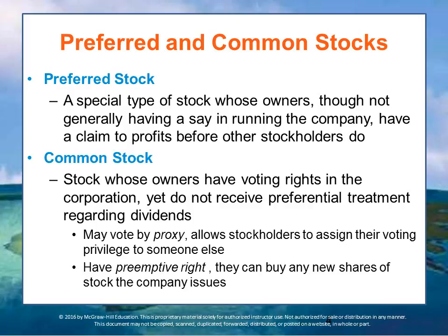Corporations issue two types of stock: preferred stock and common stock. Owners of preferred stock are a special class of owners because, although they generally do not have a say in running the company, they do have claims on profits that are preferred before any other stockholders. Other stockholders do not receive any dividends unless the preferred stockholders have already been paid their preferences. Dividends unpaid from previous years must also be paid to preferred stockholders first.